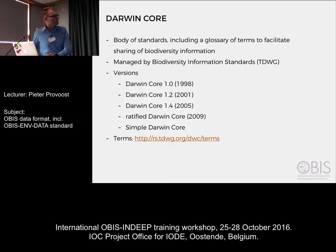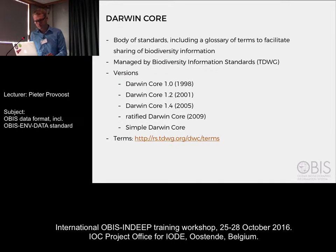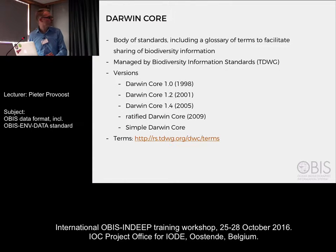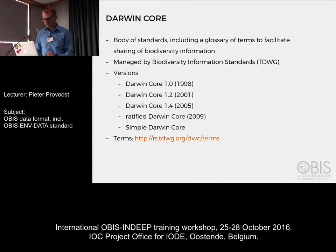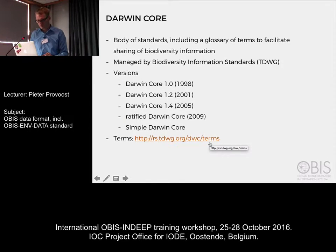Darwin Core archives are actually built on another standard, the Darwin Core. This is a standard that's managed by TDWG and it's basically a huge collection of terms or fields or columns to share biodiversity information. Darwin Core was ratified in 2009 by TDWG but it has some history before that, with version 1 being published in 1998. If you want to get an overview of all the terms, you can go to this page on the TDWG website.